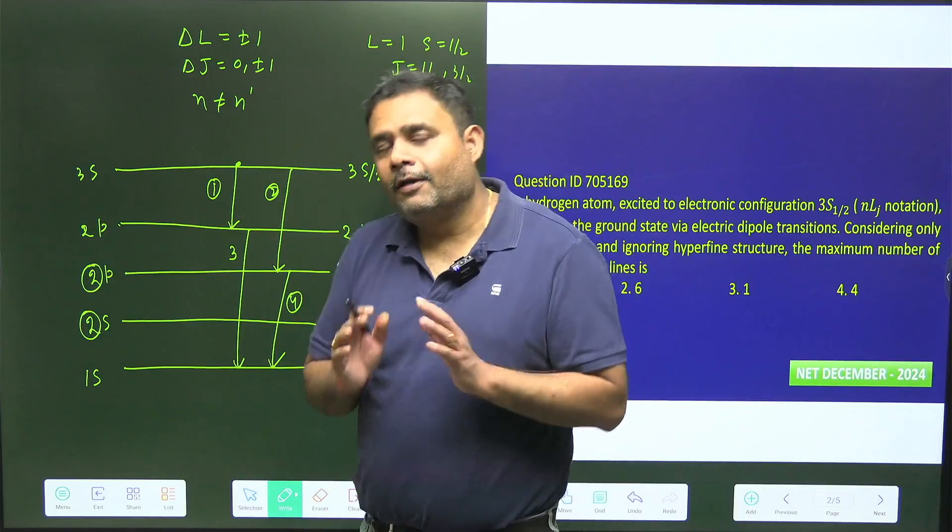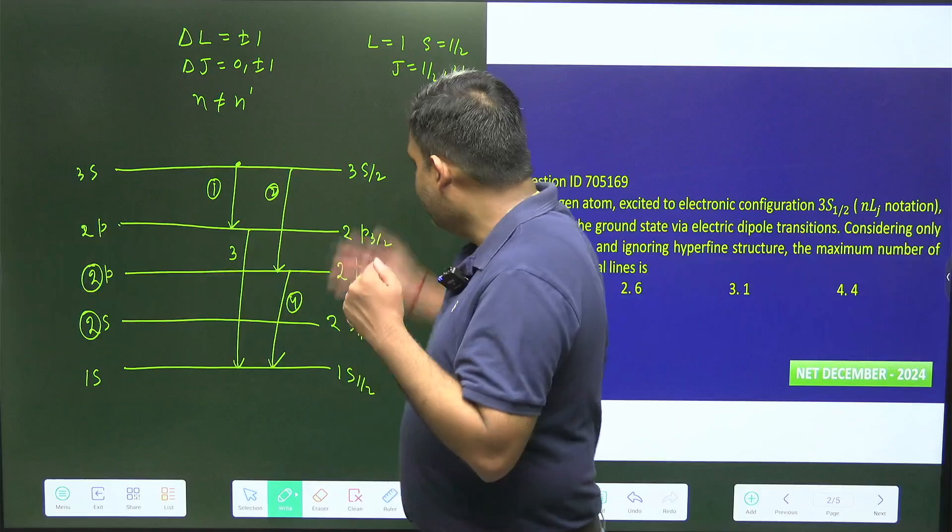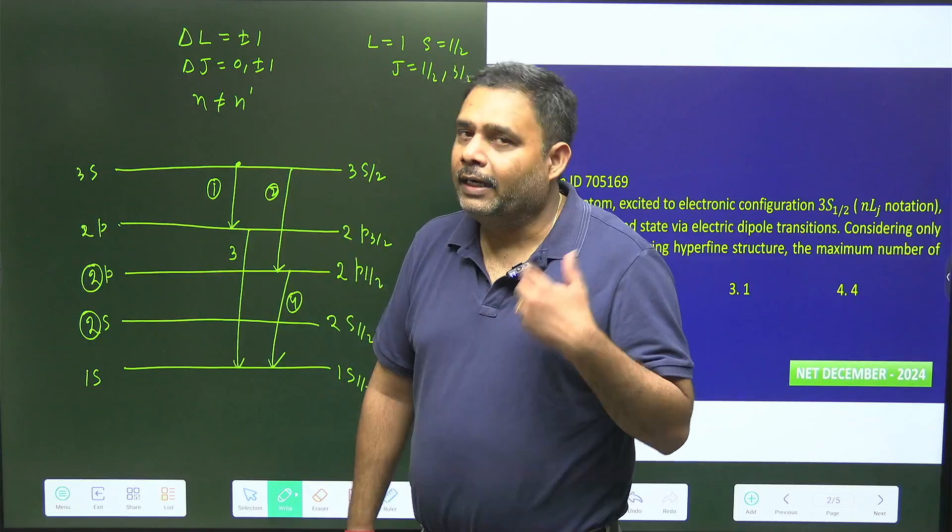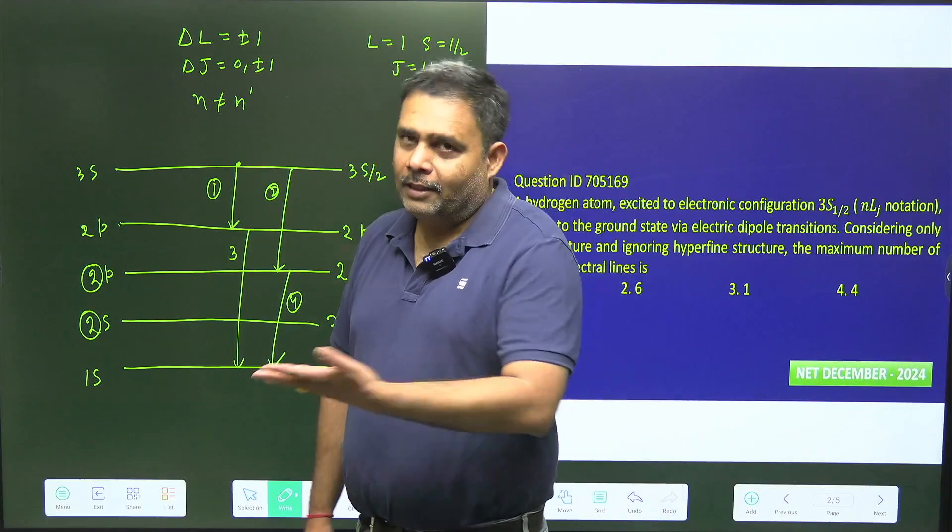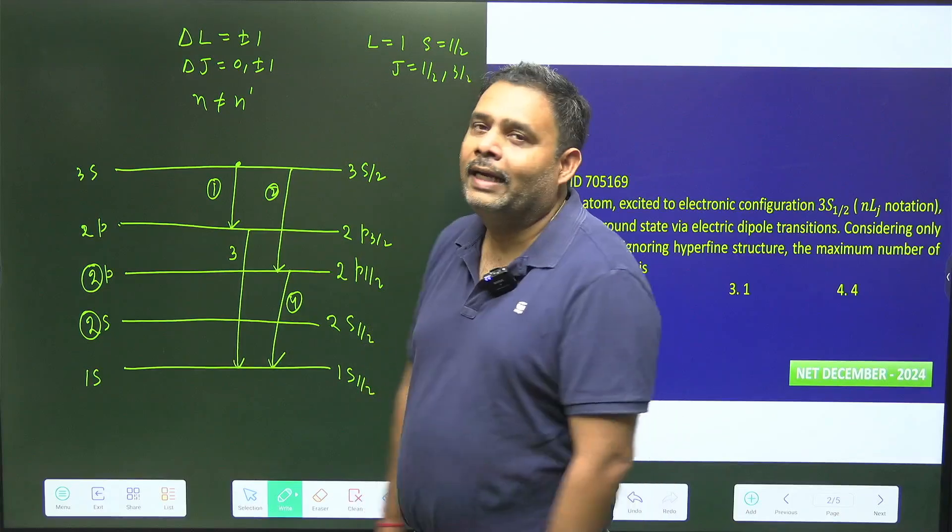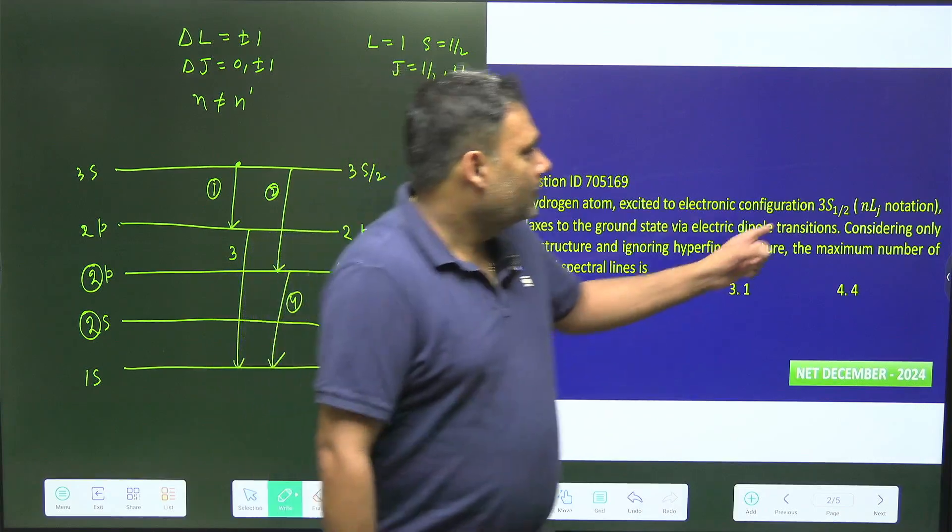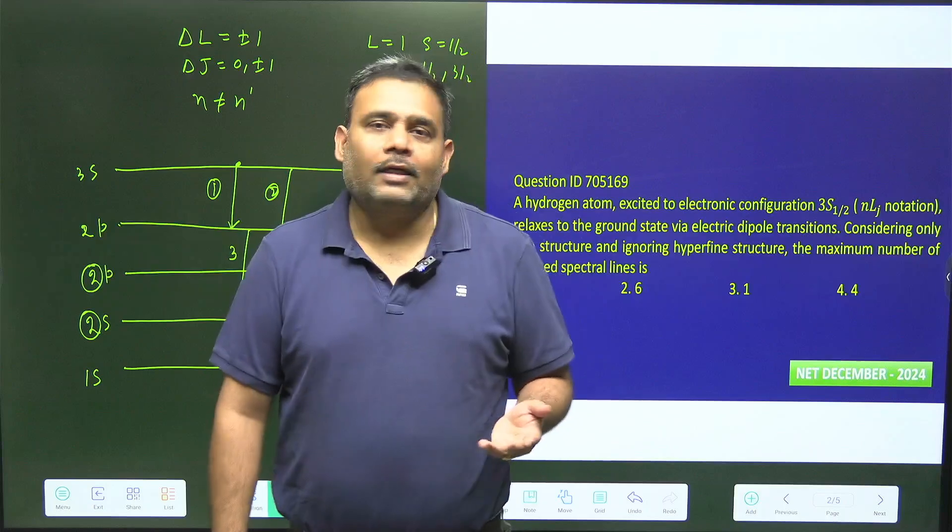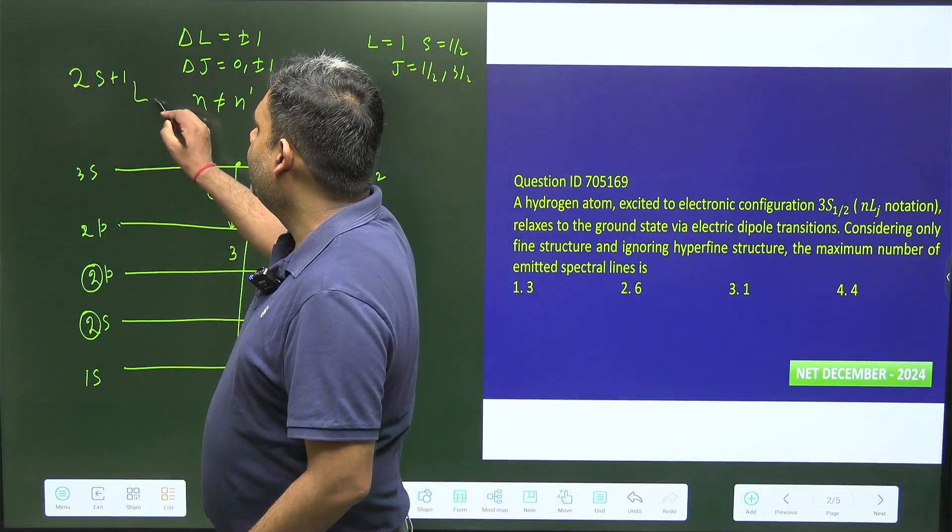So it is a wonderful question. If you know the selection rule and if you know how to write this particular splitting, then you can easily solve this question. This one question just revises your all concepts of LS coupling mainly in nlj notation. You have to always take care of the notation because in general we are using 2s plus 1 Lj notation.